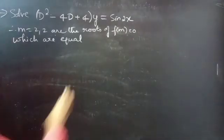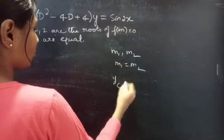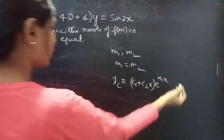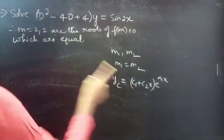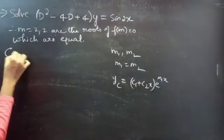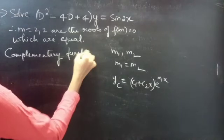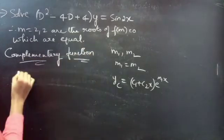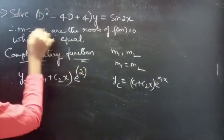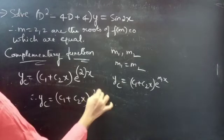We know that if two roots m1 and m2 are equal, then the complementary solution is yc = (c1 + c2x)·e^(equal root · x). Since we have the repeated root m = 2, the complementary function is yc = (c1 + c2x)·e^(2x).